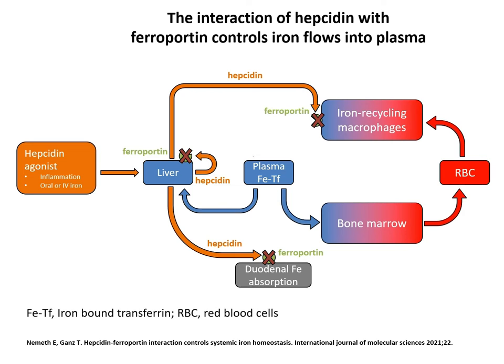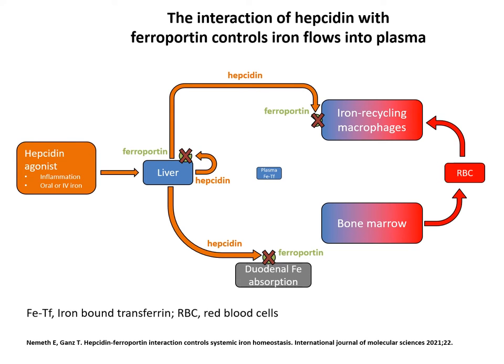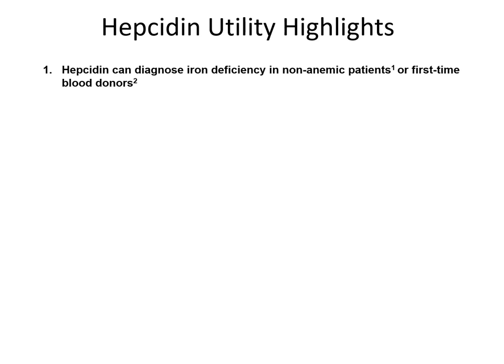As a result, iron no longer enters circulation, causing the available plasma iron pool to shrink, as the remaining iron is rapidly consumed in the bone marrow and taken up by the liver. Once the available iron is used up, iron-restricted erythropoiesis becomes stressed, causing a reduction in the number of new, mature red blood cells. As the master regulator of iron homeostasis, hepcidin levels can predict iron deficiency in non-anemic patients before hemoglobin dips below the anemic threshold.